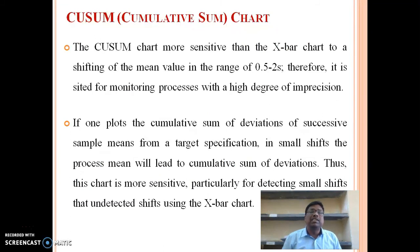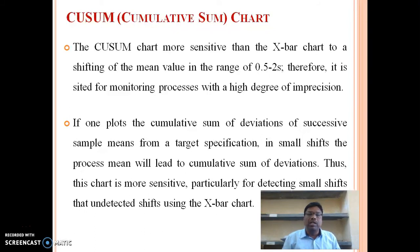The CUSUM chart is more sensitive than the x-bar chart for shifts in the range of 0.5 to 2 sigma. It is therefore suited for monitoring processes with a high degree of precision. If one plots the cumulative sum of the deviations of successive sample means from a target specification, a small shift in the process mean will lead to a steady drift in the cumulative sum of deviations. Thus, this chart is more sensitive — particularly for detecting small shifts that go undetected using the x-bar chart.